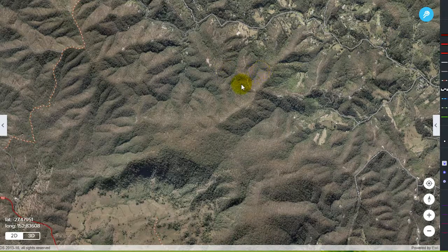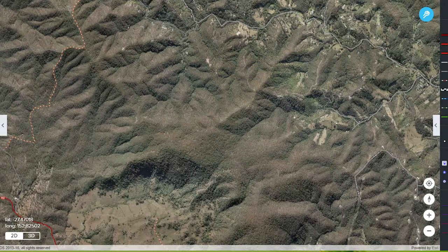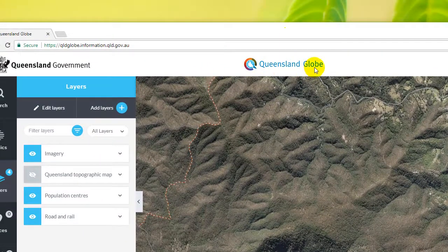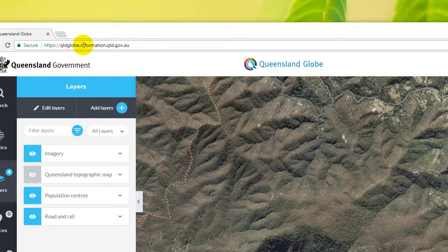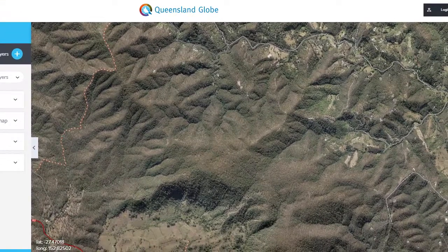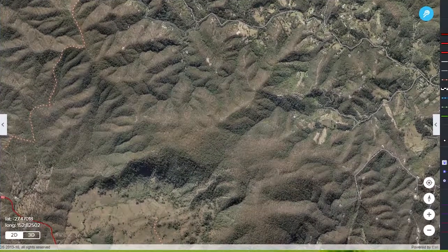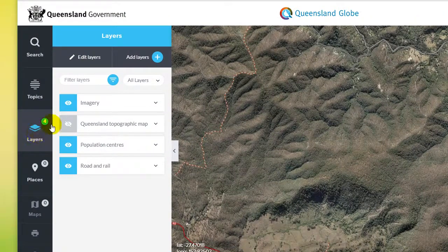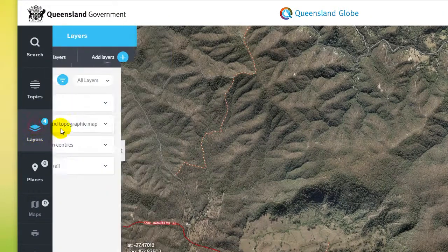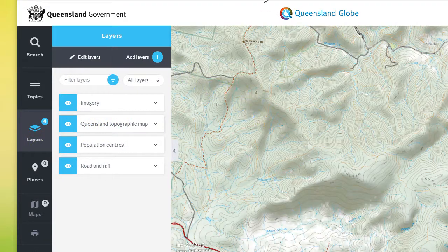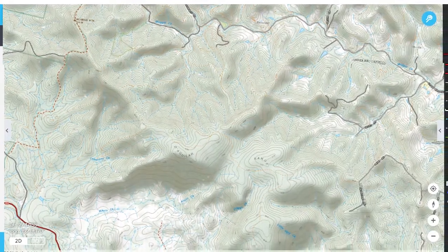You can see here right now I have a map. This is actually not Google Maps, it's called Queensland Globe. If you Google that you should be able to see this address queenslandglobe.information.qld.gov.au and the cool thing about this map is you can actually turn on under layers Queensland topographic map. If you turn that on you will see a map with contour lines.